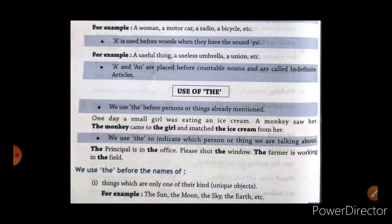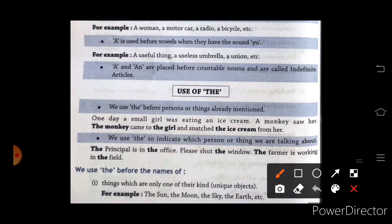We use the before person or thing already mentioned. Like, one day a small girl was eating an ice cream. A monkey saw her. The monkey came to the girl. Kyunki girl ki baat pehle ho chuki hai. That's why sentence mein woh dubara aate hai.